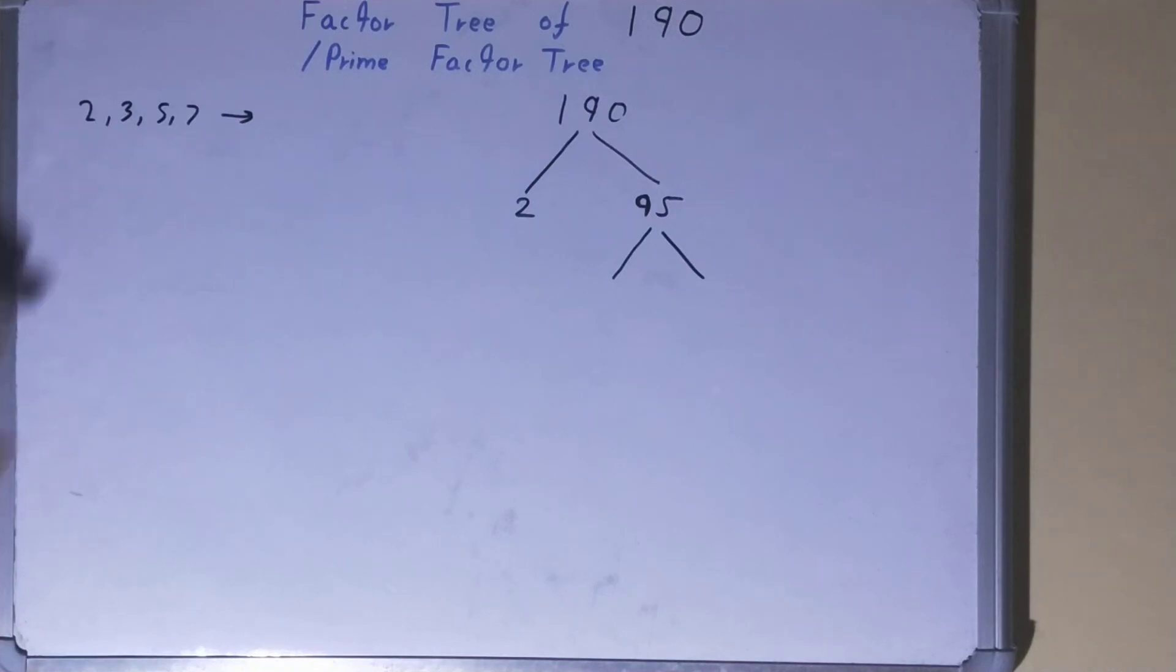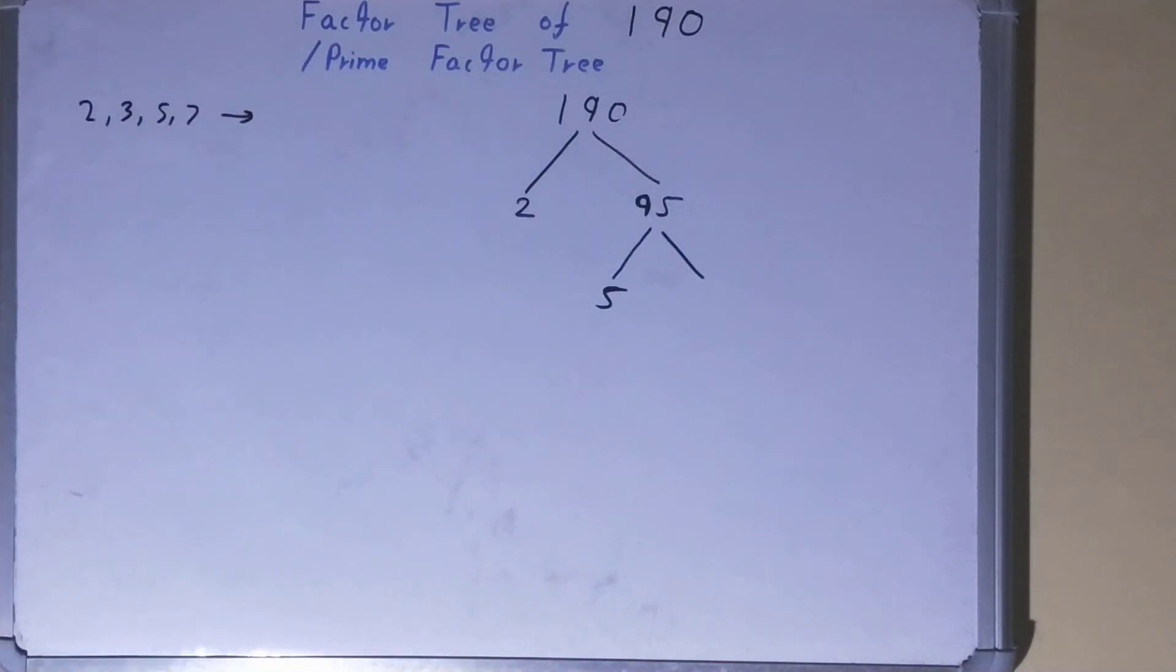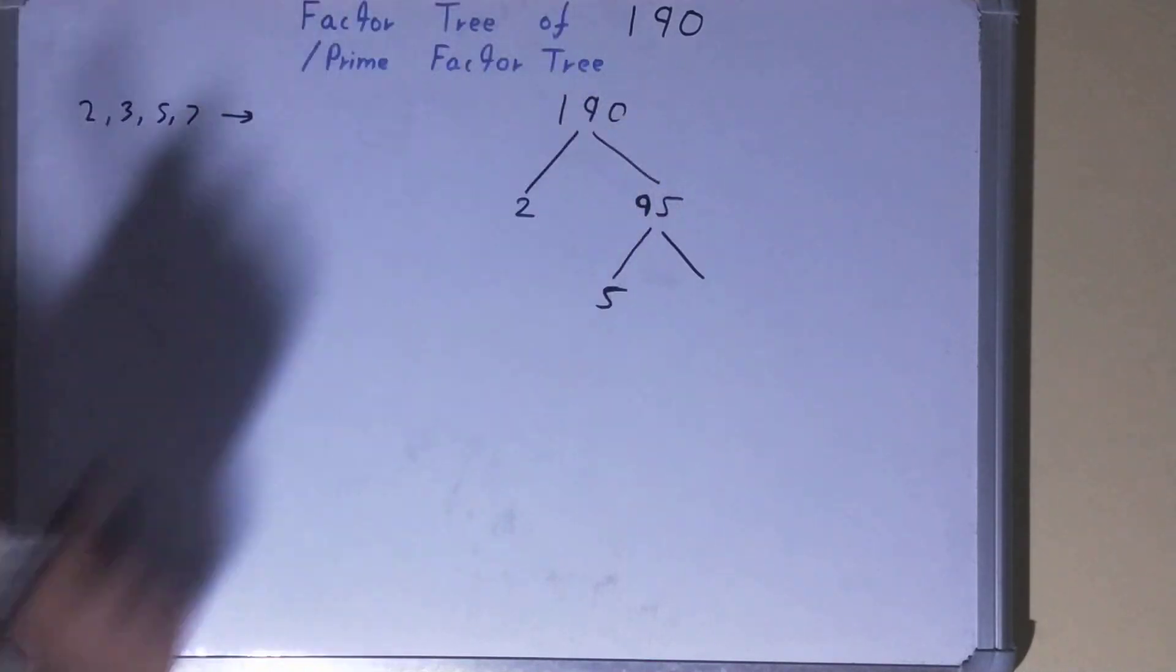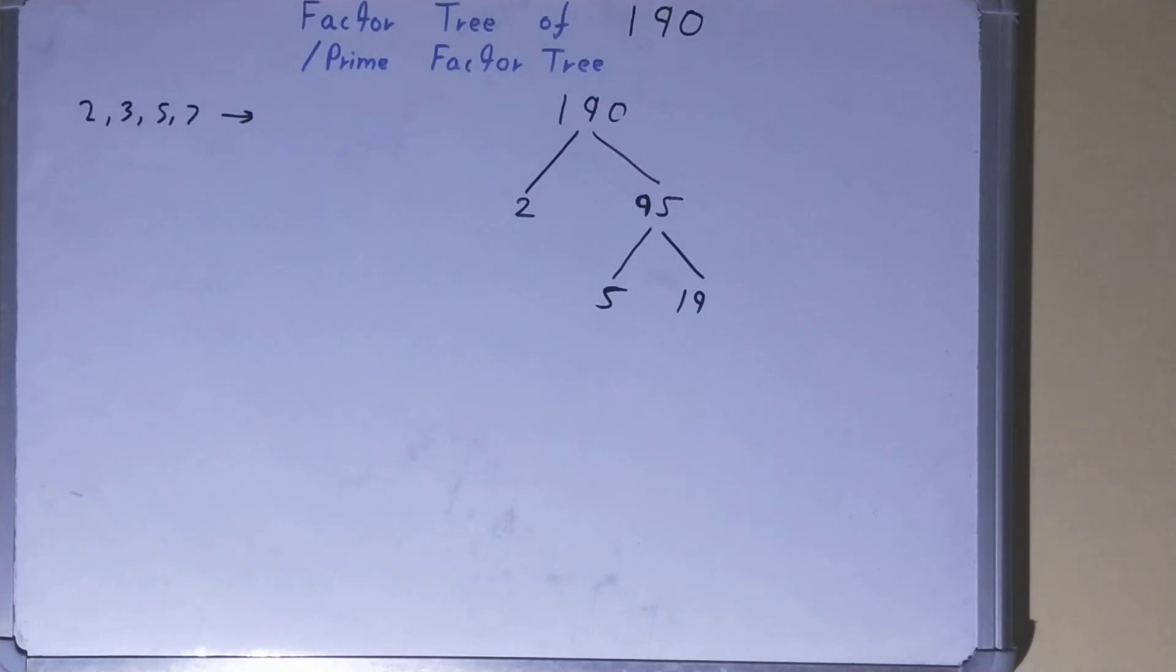Is the number 95 divisible by 2? No. Is it divisible by 3? No. Is it divisible by 5? Yes. So one of the numbers will be 5, the other will be whatever we get after dividing. So 95 divided by 5, what we get, we get 19.